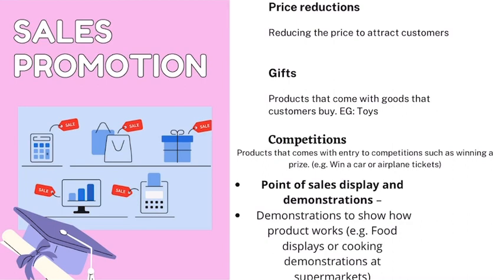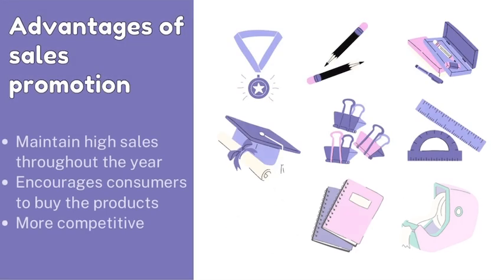Then there is point of sale display and demonstrations — this is when demonstrations show how the product works, like food displays or cooking demonstrations at supermarkets. When you go to a supermarket, you may see a person advertising a food product, makeup, shampoos, or creams, showing you how the product works. For food, you get to taste it, which may make you buy the product. Advantages of sales promotion include it being easier to maintain higher sales throughout the year, encouraging consumers to buy products, and increasing competitiveness amongst businesses.